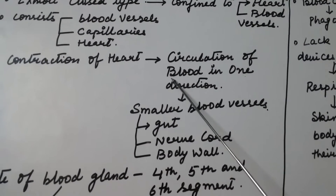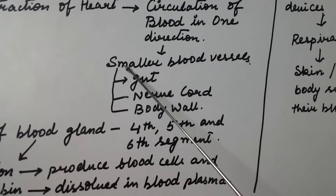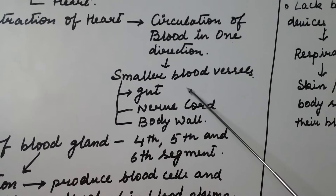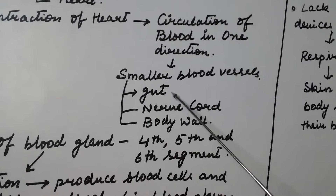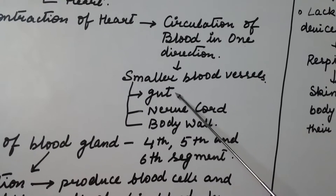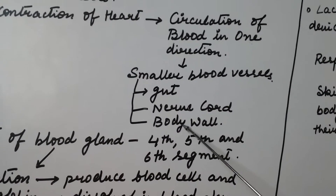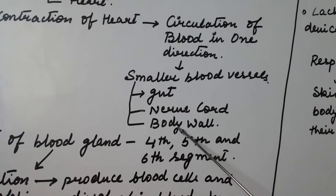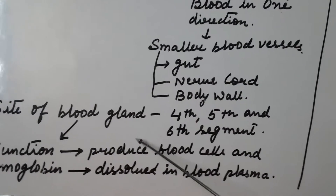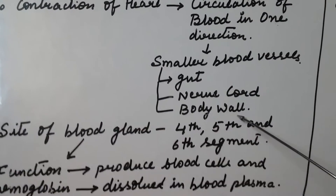The contraction of the heart keeps the blood circulating in one direction. The smaller blood vessels supply the organism with blood in the gut, nerve cord, as well as the body wall.